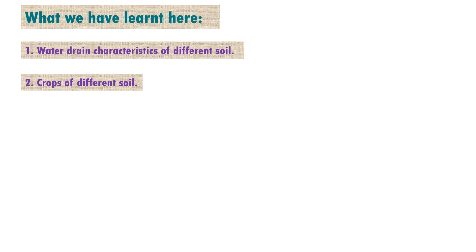Legumes and jackfruit grow well in clay soil, not in sandy soil or loamy soil. Watermelon, cucumber, and groundnut grow well in sandy soil, but not in clay or loamy soil. Paddy, wheat, maize, barley, and sugarcane grow well in loamy soil, but not in sandy or clay soil. These are the differences between the different kinds of soil — due to their different characteristics, different crops grow well in different soils.